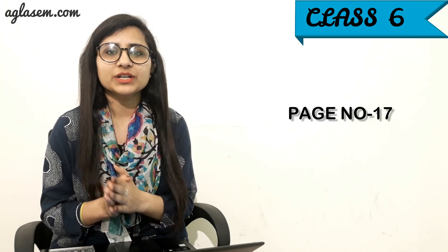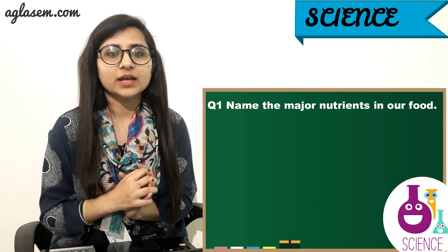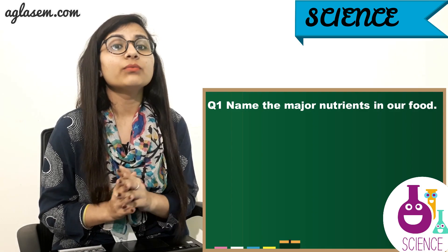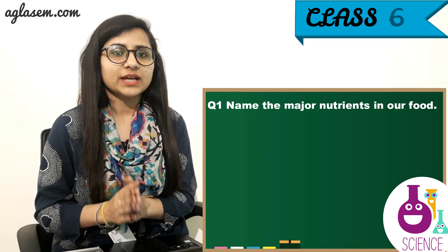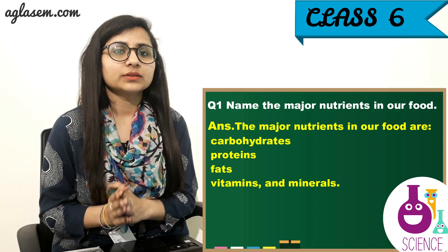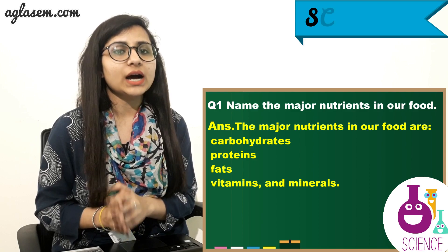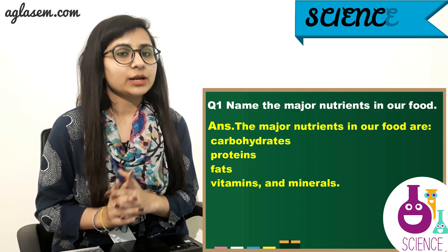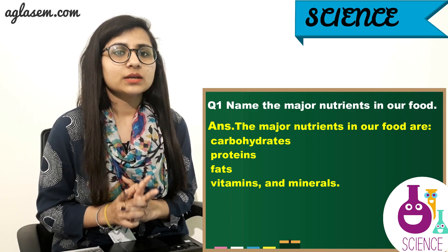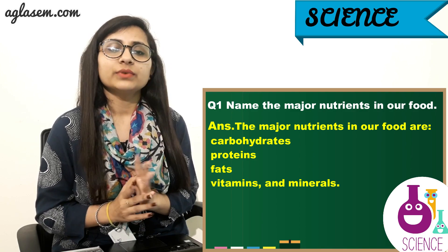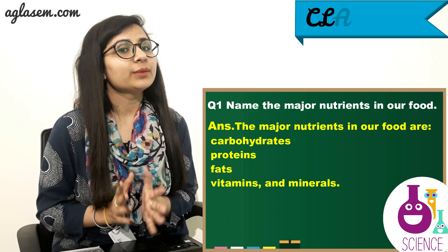Turn to page number 17, question number 1: Name the major nutrients in our food. The answer is: the major nutrients in our food are carbohydrates, proteins, fats, vitamins, and minerals.